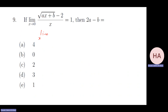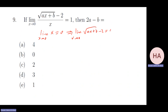This limit exists. Notice the limit of the denominator equals zero, which means the limit of the numerator must also equal zero. That means the square root of b minus two equals zero, so root b equals two, meaning b equals four. Now use b equals four to find a.